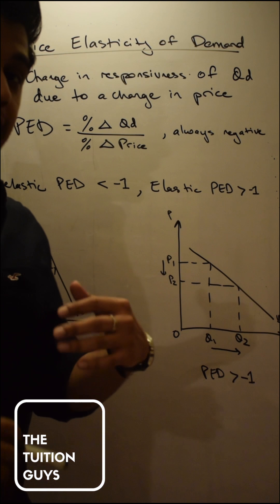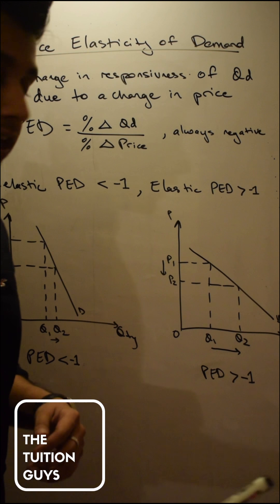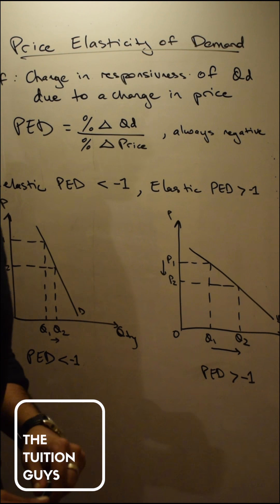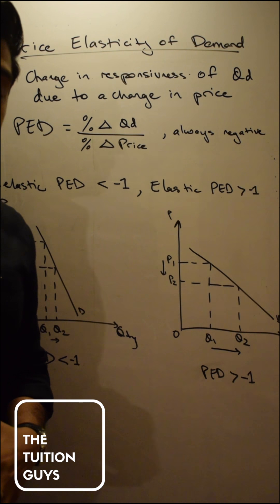But the theory of demand also said that if price is going down quantity should rise regardless. Yes, it is rising regardless, but it didn't say to what extent it would rise, right? That's when we bring in price elasticity demand to determine to what extent should quantity demanded be increasing.